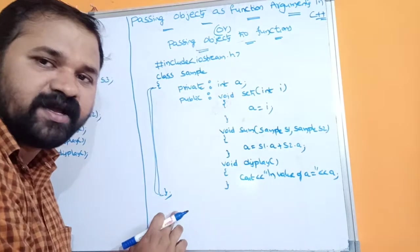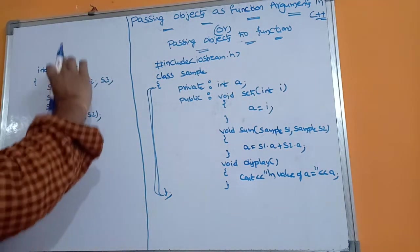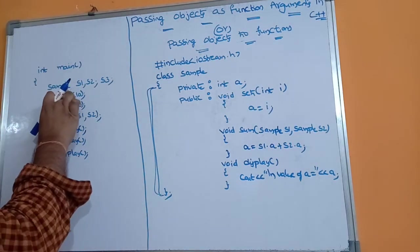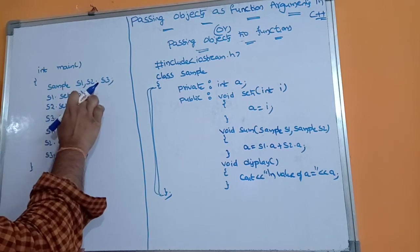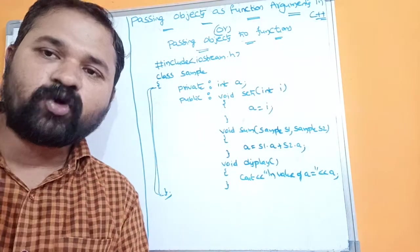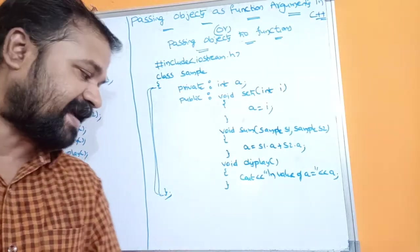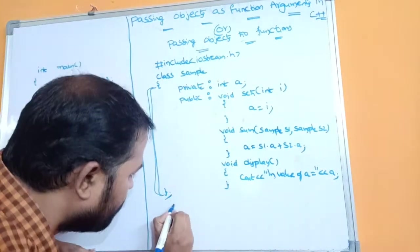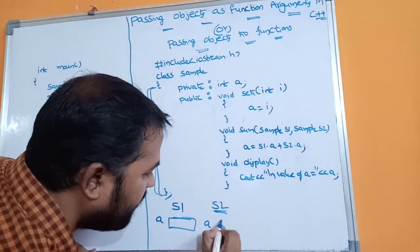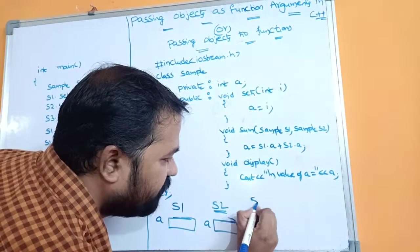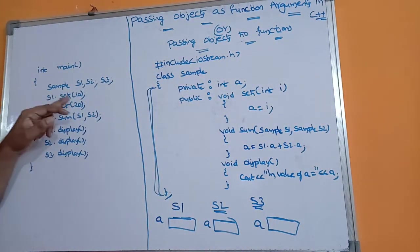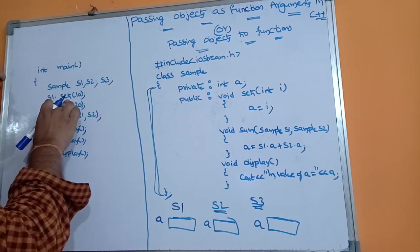Now let's look at the main function. Execution of any program starts from main. Here we have created three objects: s1, s2, and s3. Whenever an object is created, memory is allocated to the member variables of the class. In this example we have one member variable, so for each of s1, s2, and s3, two bytes of memory will be allocated for variable a.